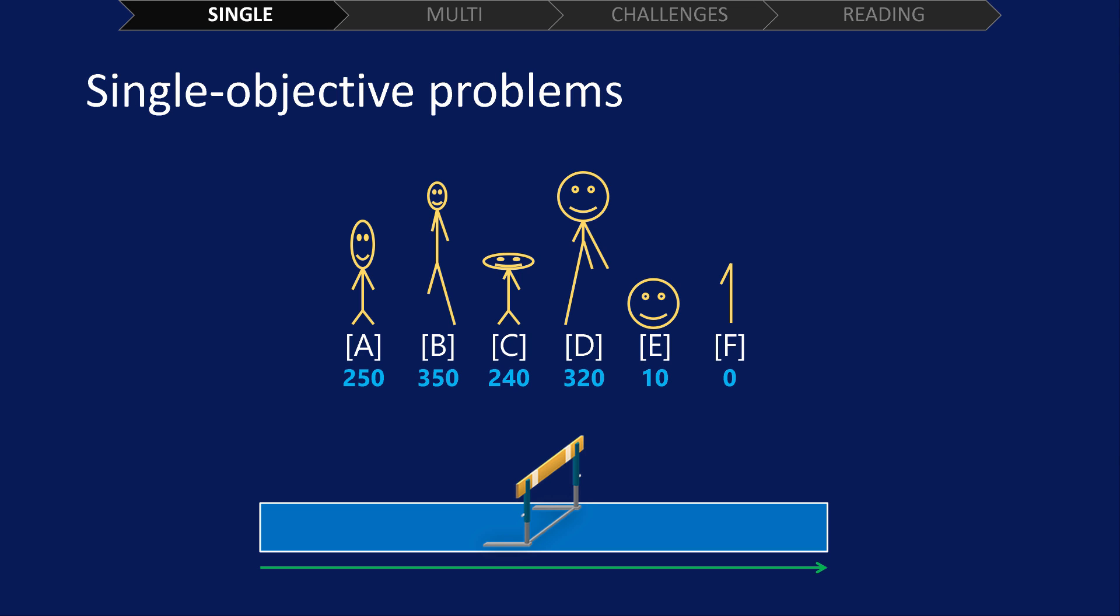The best solution to a single objective problem would simply be the solution with the highest fitness score. Because this is a single objective problem, with these five different solutions, it's simple to say that solution B is the best. This is because it has the highest fitness score.